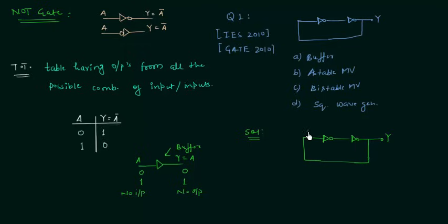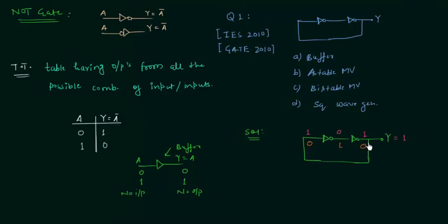Now let's analyze the given circuit. Let's say the input here is 1. As 1 is the input to the first NOT gate, output is 0. This 0 acts as input to the second NOT gate, so output is 1. So input was 1 and output Y equals 1. Because of the feedback, we get 1 again, so output stays 1 always when input is 1. If input equals 0, first NOT gives 1, second NOT gives 0, and the feedback keeps output at 0. So when input is 1, output is 1, and when input is 0, output is 0.